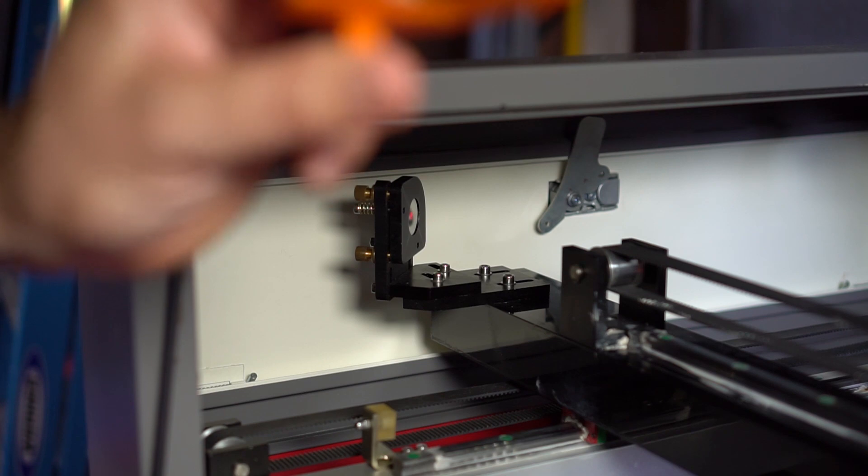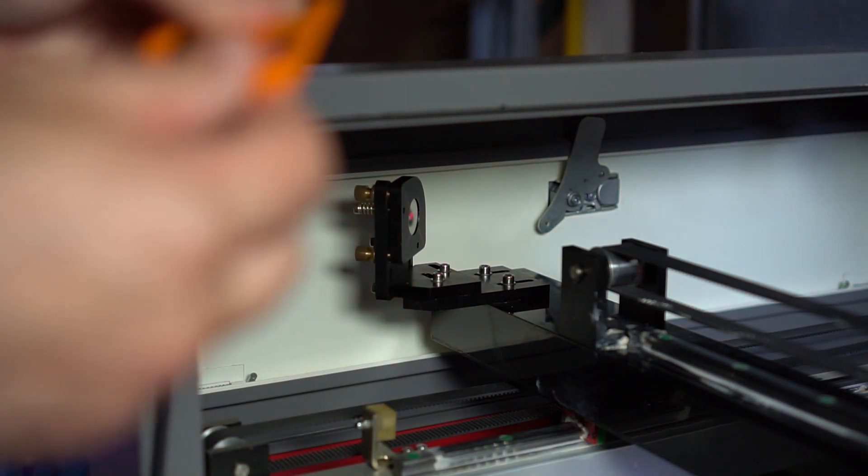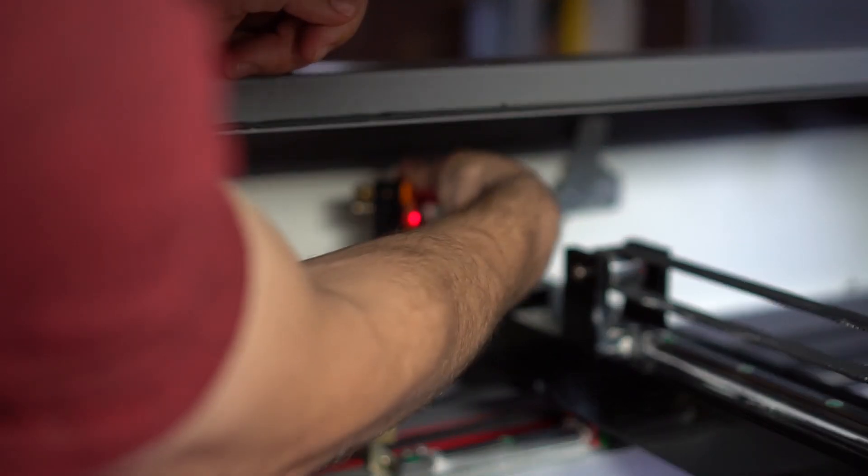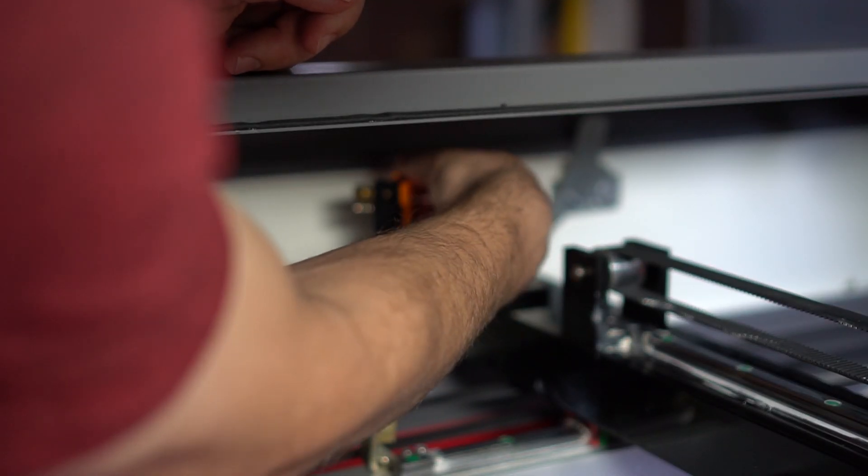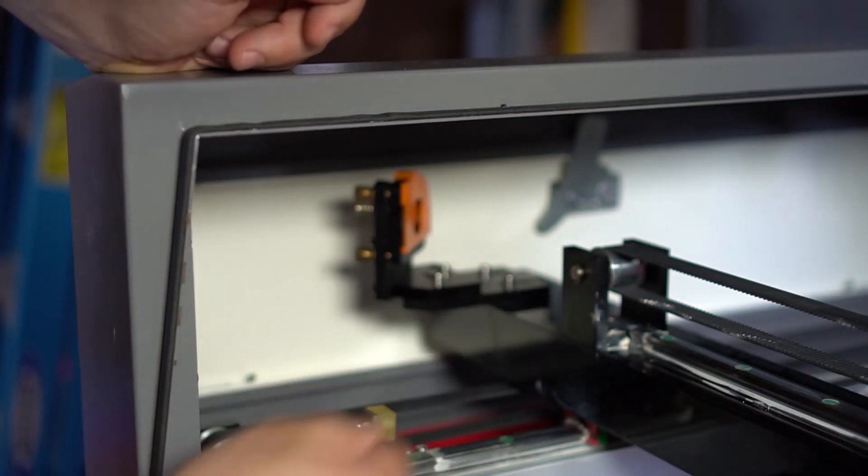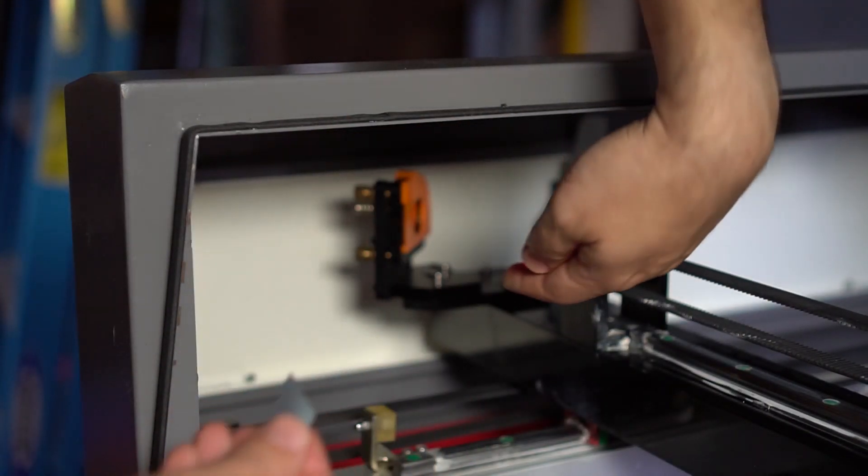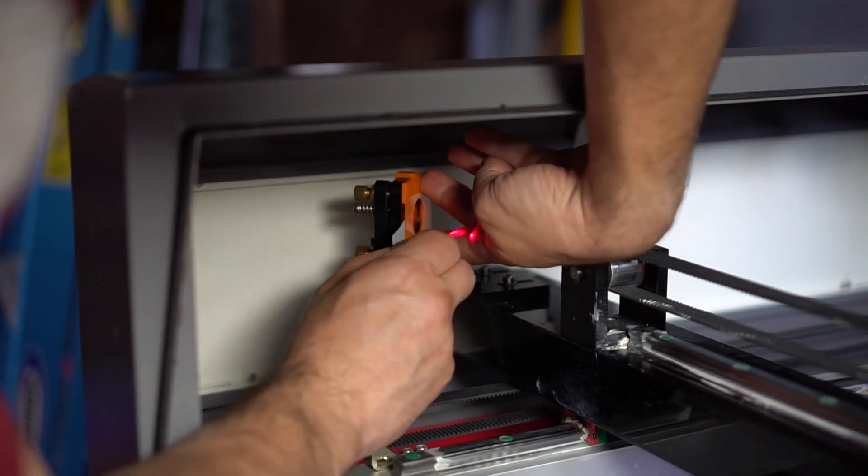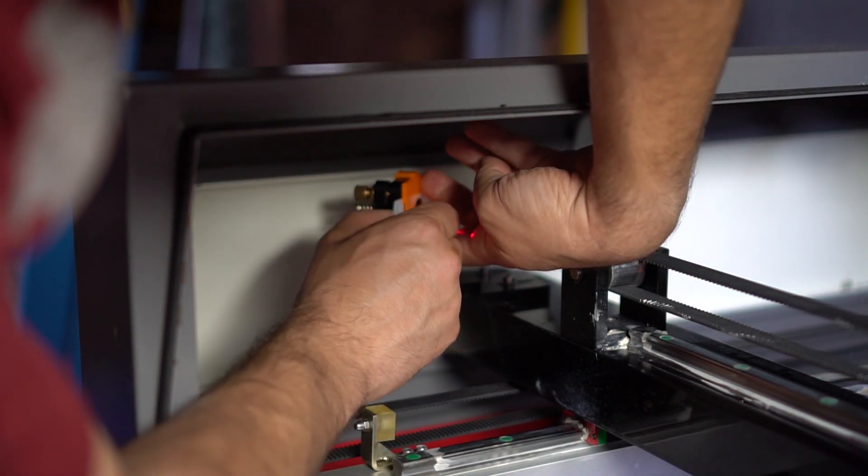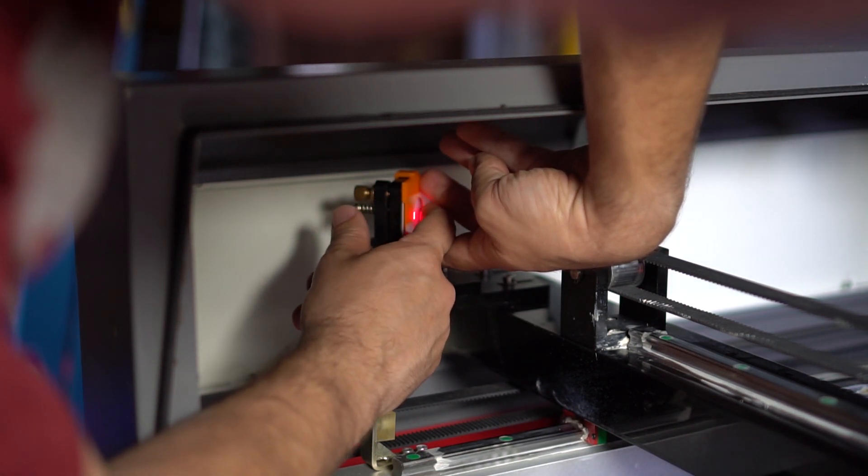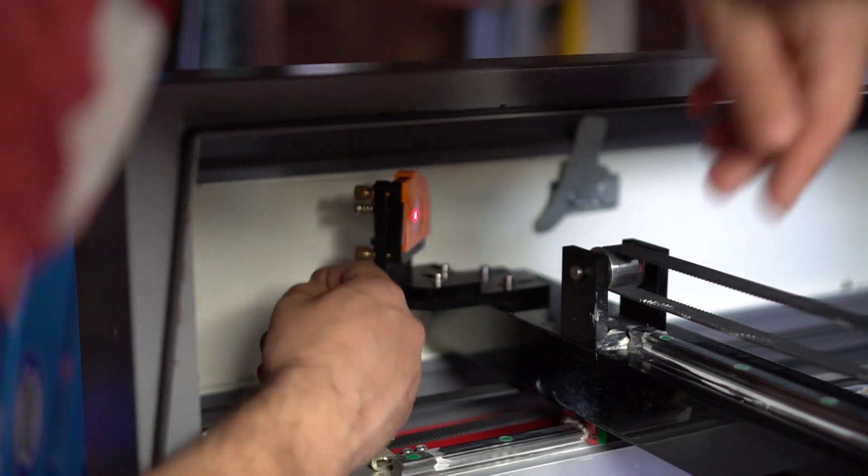Now we're going to take our second mirror jig and install it here, like this, make sure it's flat. And then you're going to take the piece of paper, hold it with your two fingers, put it in, and it's in perfect.